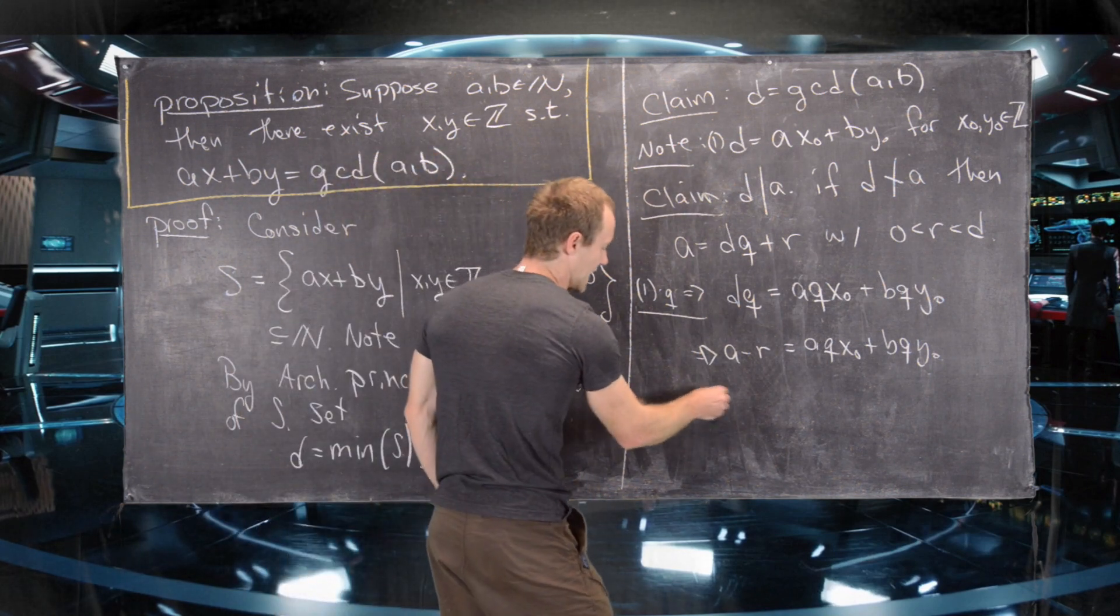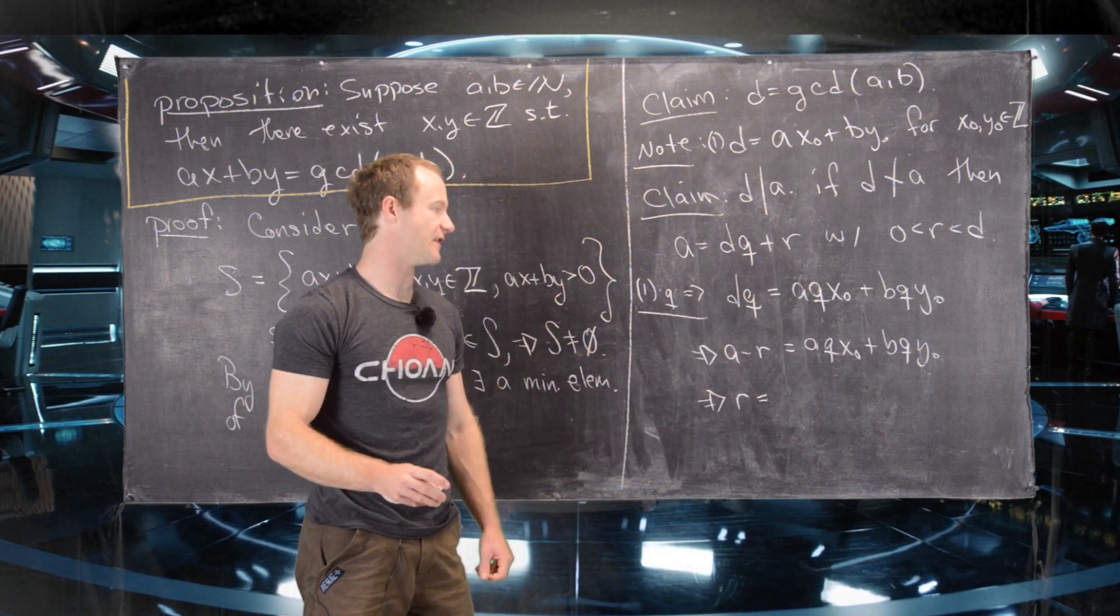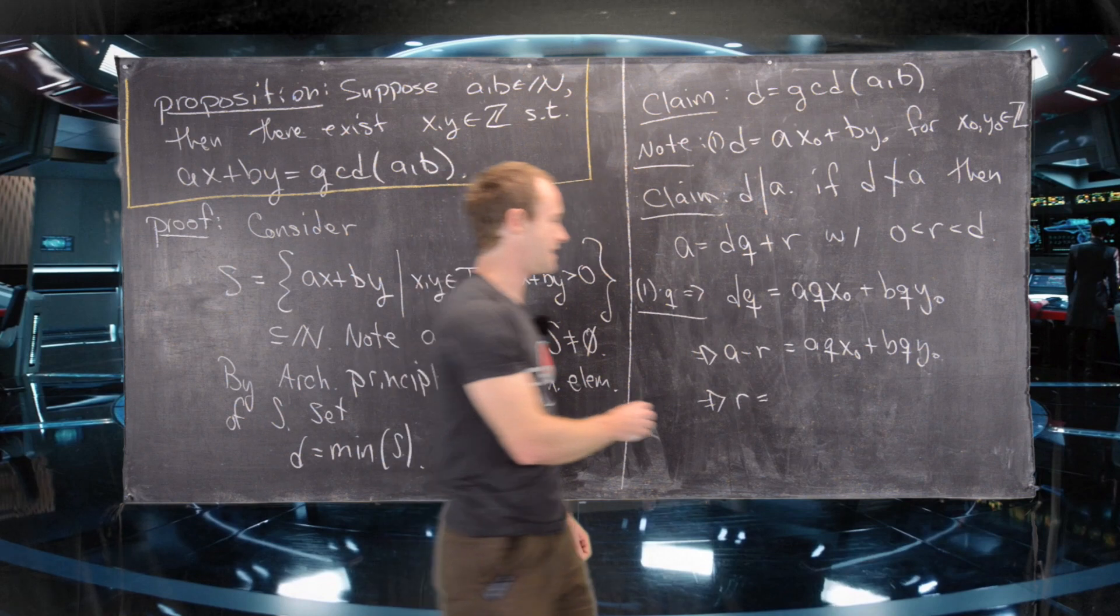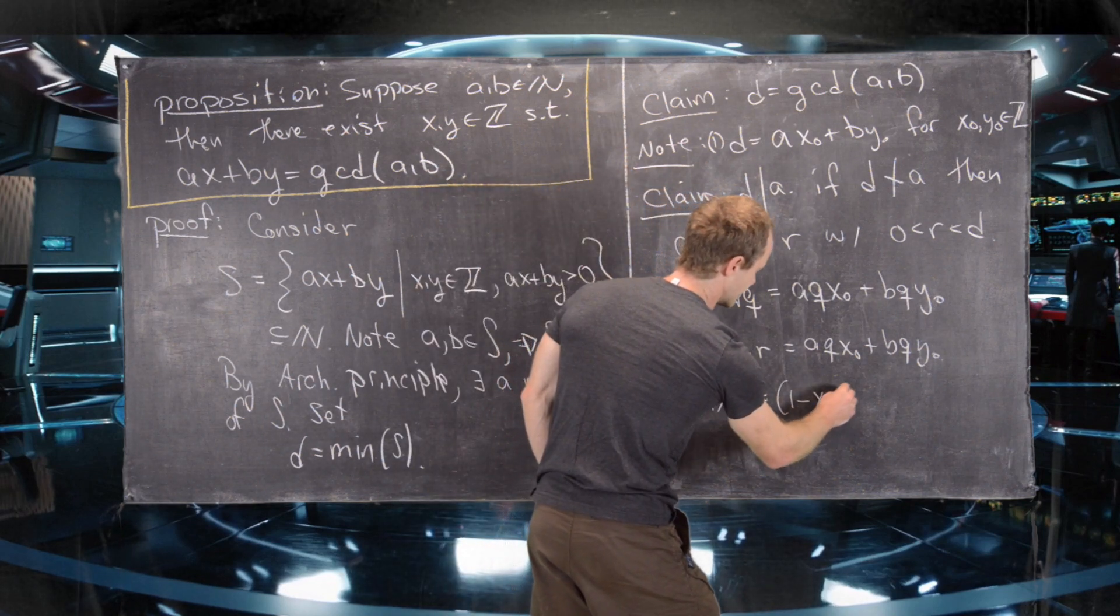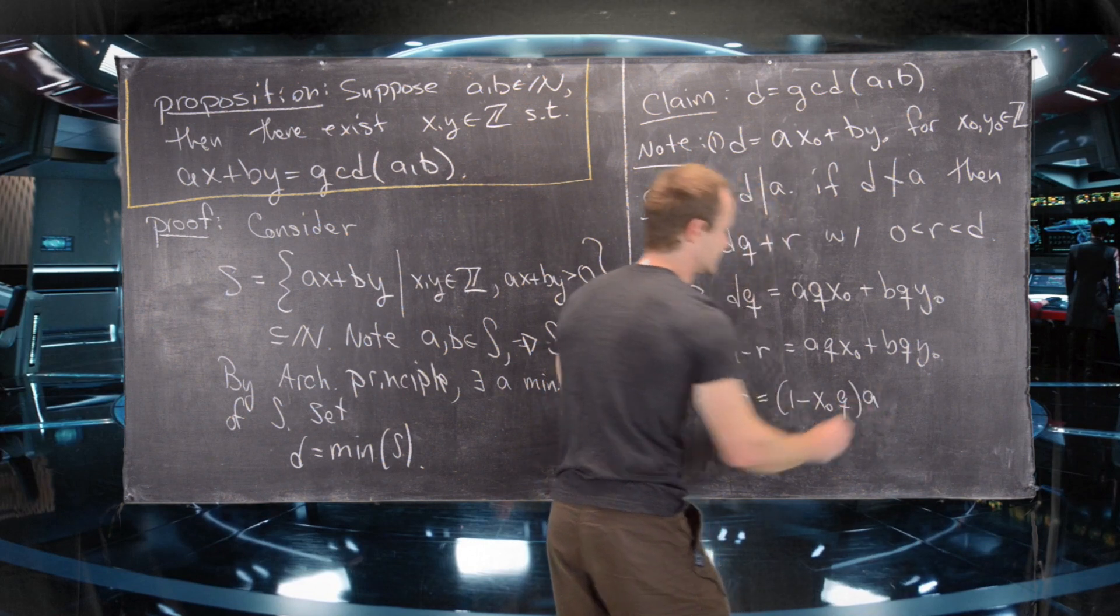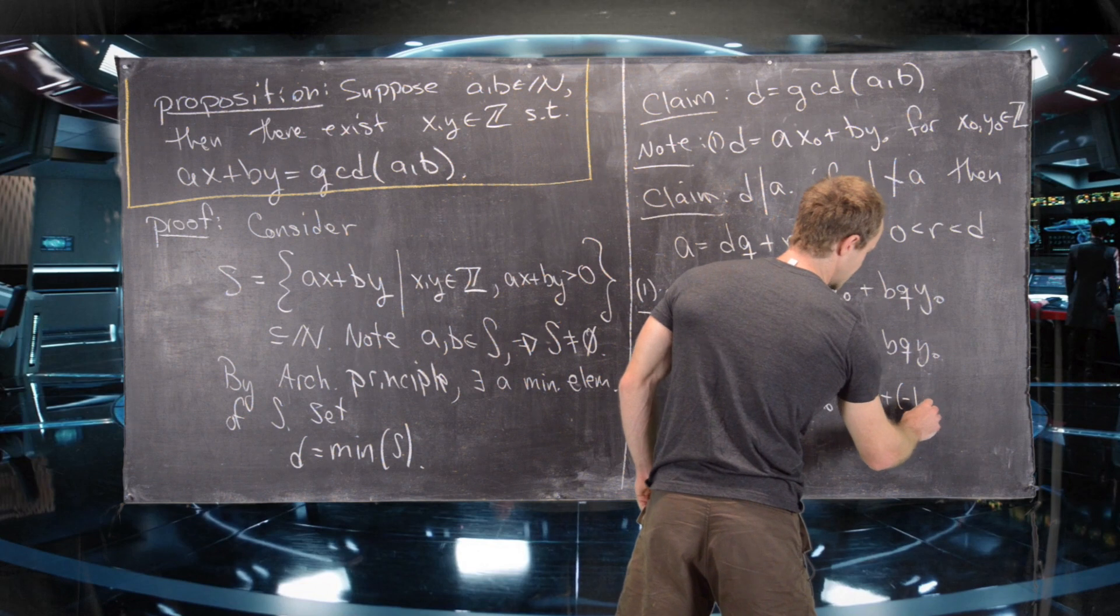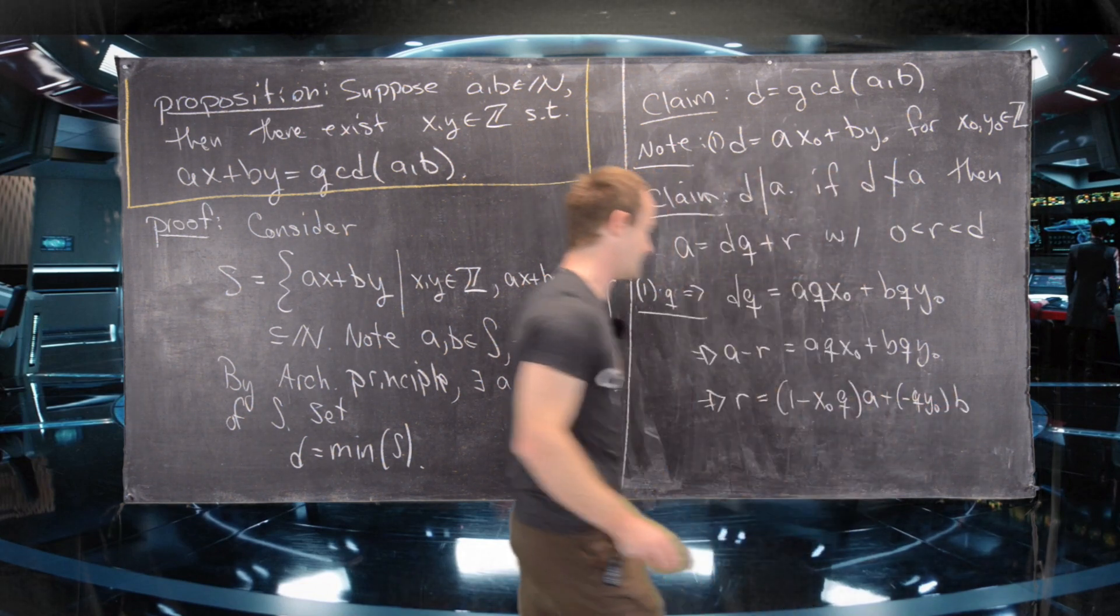But now that allows us to write R as a linear combination of A and B. So let's see what linear combination of A and B it is. It is 1 minus X0 Q is the coefficient of A. And then minus Q times Y0 is the coefficient of B. So we get that.